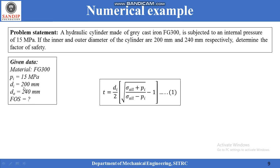The given data extracted from the problem: material FG300, internal pressure pi = 15 MPa, Di = 200 mm, Do = 240 mm, and factor of safety is to be found. Going through the problem statement carefully, we realize that grey cast iron is a brittle material.